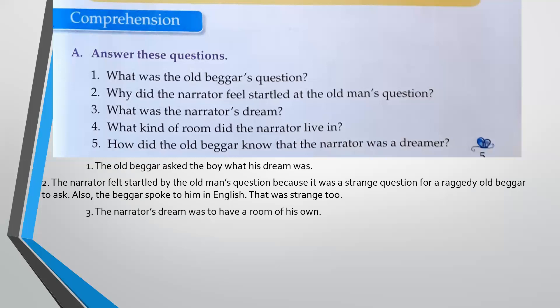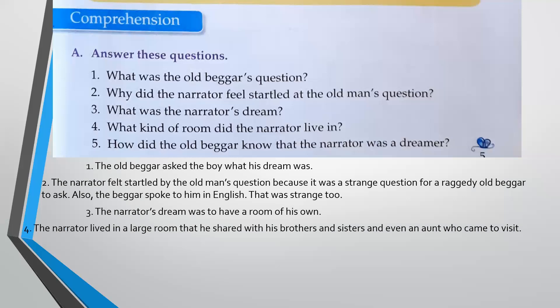The fourth one, what kind of room did the narrator live in? You know from the story that the narrator already lived in a room, but he was not satisfied with that room. The narrator lived in a large room that he shared with his brothers and sisters and even an aunt who came to visit. He wanted privacy. He wanted his own little room that he did not have to share with anyone. He wanted freedom.